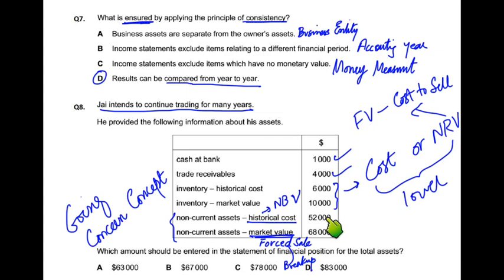تو ان values کو add کریں: cash 1,000، trade receivables 4,000، inventory lower value 5,000 (6,000 اور 5,000 میں سے)، اور non-current assets 10,000 + 1,000 = 11,000۔ Total: 1,000 + 4,000 + 5,000 + 11,000 = 63,000۔ اس سوال میں going concern concept بھی پڑھ لیا اور prudence concept بھی پڑھ لیا۔